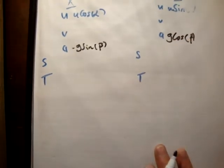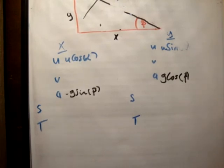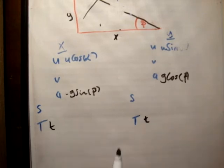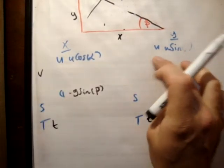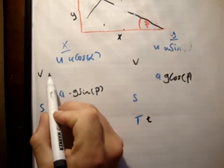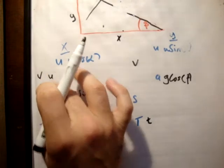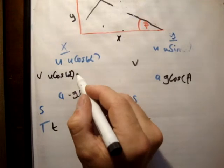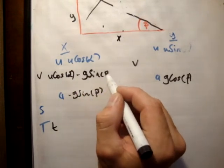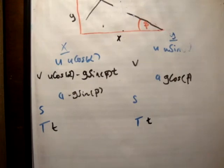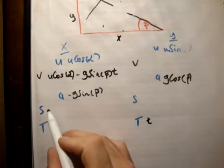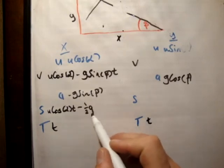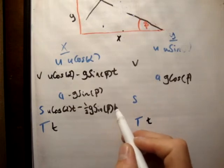So, next thing we need to do is put in expressions for our v and s. So, v is equal to u plus at. So, that's u cos alpha plus at. So, that's minus g sine beta t. S is equal to ut plus a half at squared. So, that becomes u cos alpha t minus a half g sine beta t squared.